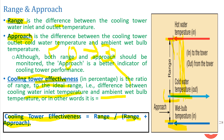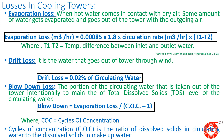Now let's see the losses in cooling towers — this is one of the most important aspects. Makeup water has to be added to the cooling tower because of losses. There are three losses: first is evaporation loss, second is drift loss, and third is blowdown loss. To maintain the water level in the system due to these losses, we have to add makeup water separately.